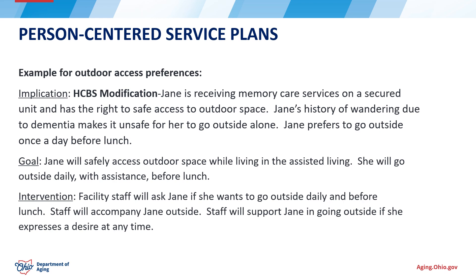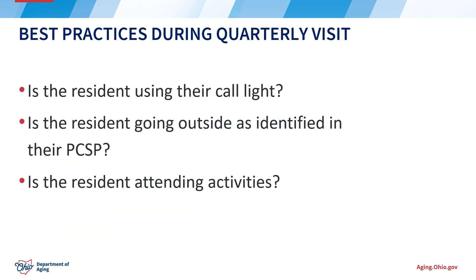We are going to conclude this training by talking about best practices case managers can use during quarterly visits with their memory care individuals. During your quarterly visits, you should review the memory care services — specifically call light response, outdoor space, and activity preferences. Review whether the resident is receiving assistance within 10 minutes or less when they activate their call light, and whether family members have any concerns about this. Cover things about outdoor space: is the resident getting to go outside as identified in their person-centered service plan, and does the family confirm this? Also talk about activities: is the resident going to activities, if not why not, and do the activities align with their preferences and/or their stage of dementia?